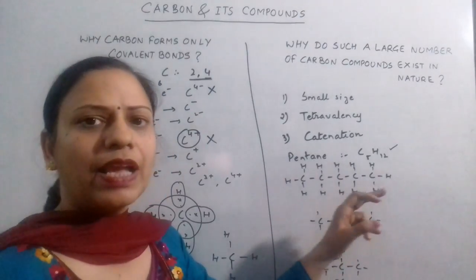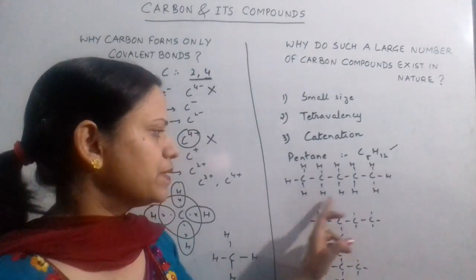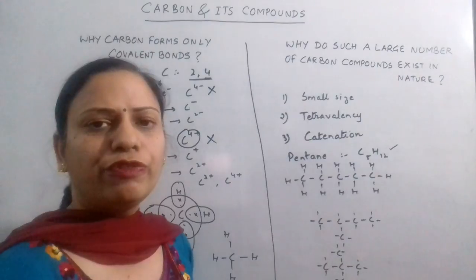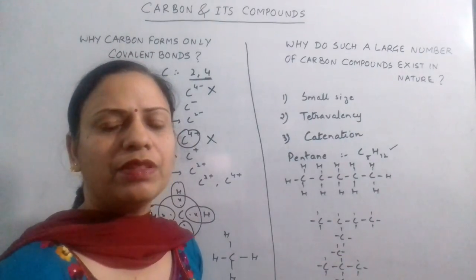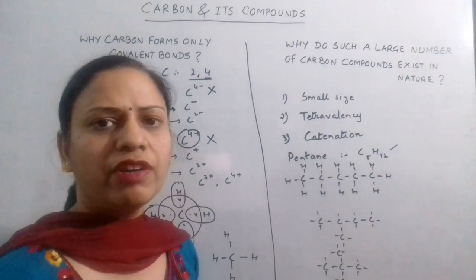So this property of carbon is known as catenation. It can link with itself as well as with other atoms such as hydrogen to form different types of structures - chains, rings, or branches.